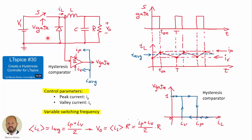Here we have the buck converter operating under hysteretic control. What we are doing is measuring the current through the inductor and comparing this current with two values — the peak value and the valley value — and generating the gate signal from this hysteretic comparator. We have seen this in a previous video, LTSPICE number 30, where we studied how to create a hysteresis controller for LTSPICE.